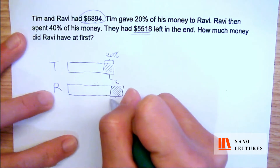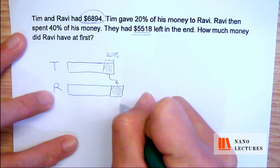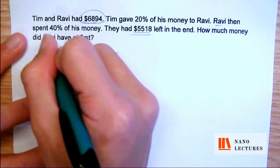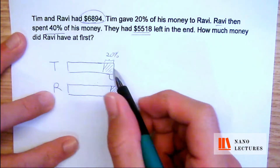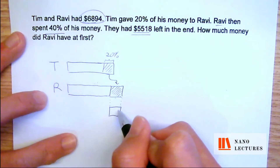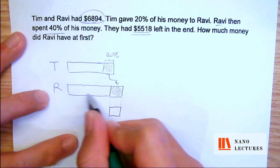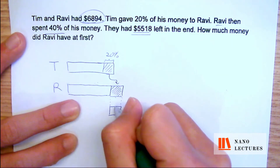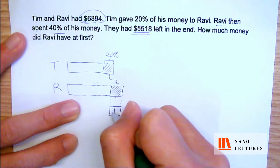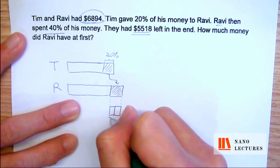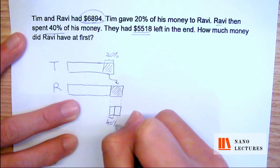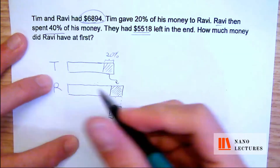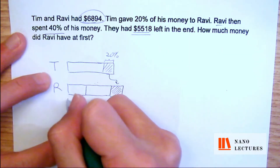And out of the 20%, Ravi spent — I'm going to extract this out. They said that Ravi spent 40% of his money, which is 40% of the amount given to him by Tim, as well as 40% of what he had originally. So I'm going to put here: this will be 40% spent, and here will be the 40% spent.